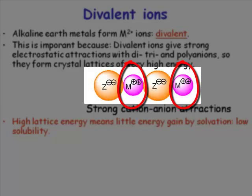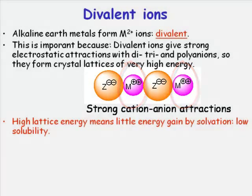That's actually incredibly significant — that's where the 'alkaline earth' part comes in. Because we are dealing with metal two-plus species, we've removed two electrons and have a two-plus positive charge. These are small, very strongly charged species. Remember: when you go from a neutral species to a cation it gets smaller, and when you go from a cation to a dication it gets smaller still, and now we have a charge of two.